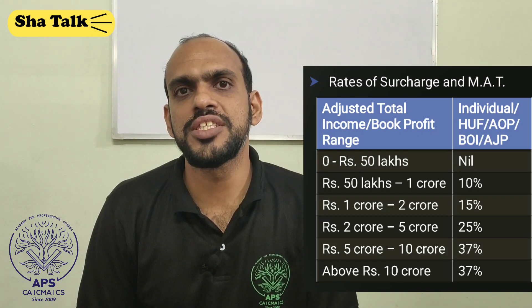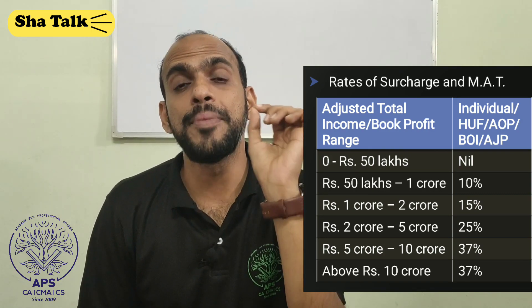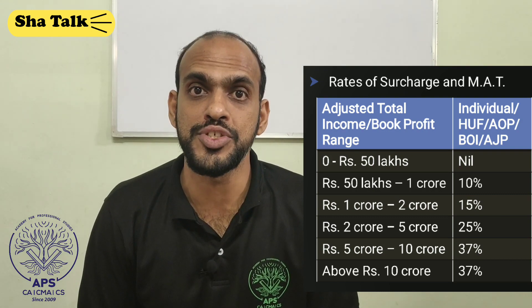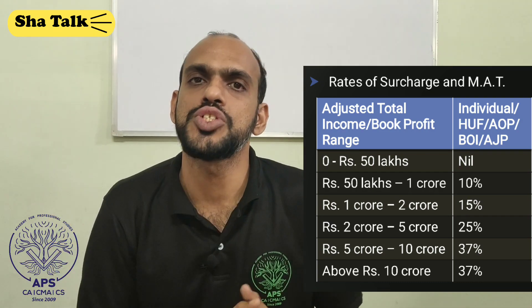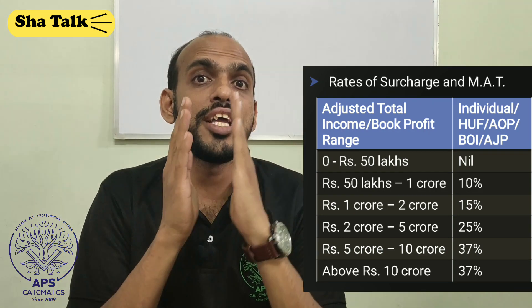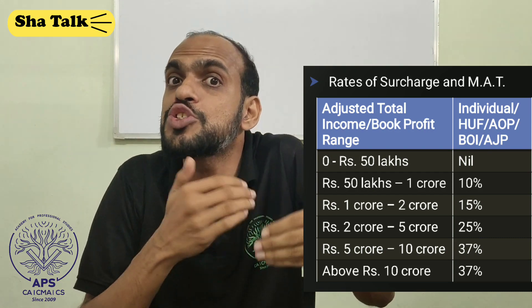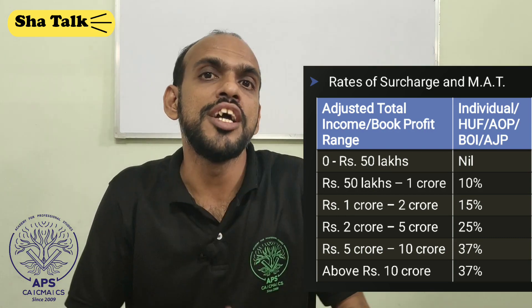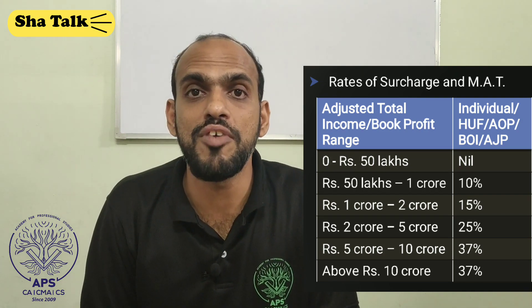Shall we start? The first amendment is related to surcharge. There is a change in surcharge rate only for individuals, HUF, AOP (Association of Persons), BOI (Body of Individuals), and Artificial Juridical Persons. The maximum limit of surcharge is increased to 37%. The rates are: up to ₹50 lakh — no surcharge; income exceeding ₹50 lakh to ₹1 crore — 10%; exceeding ₹1 crore to ₹2 crore — 15%; above ₹2 crore — 25%; above ₹5 crore — 37%.